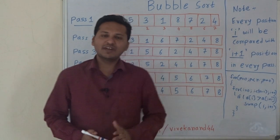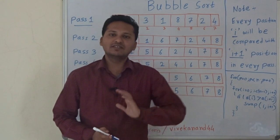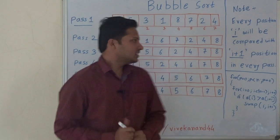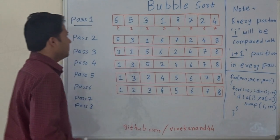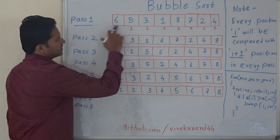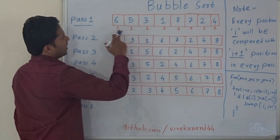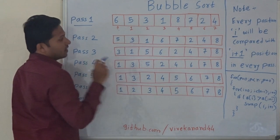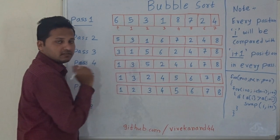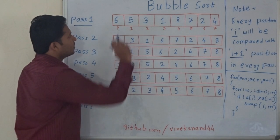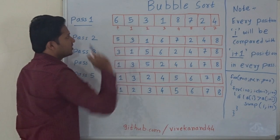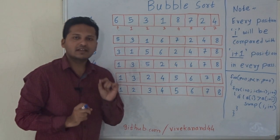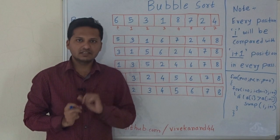Hello friends, today we are going to learn the algorithm for bubble sort. So let's see an example. This is the array and these are the indices of the array. There are 8 elements in this array and we will apply the bubble sort algorithm on this array to sort it in increasing order.